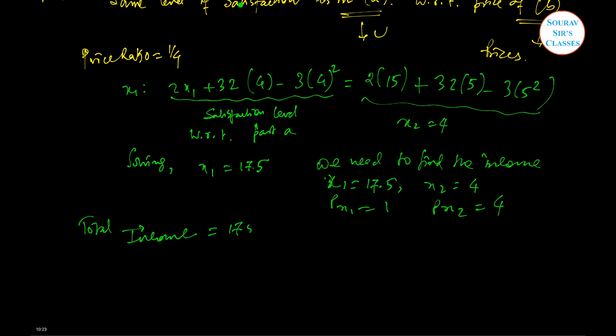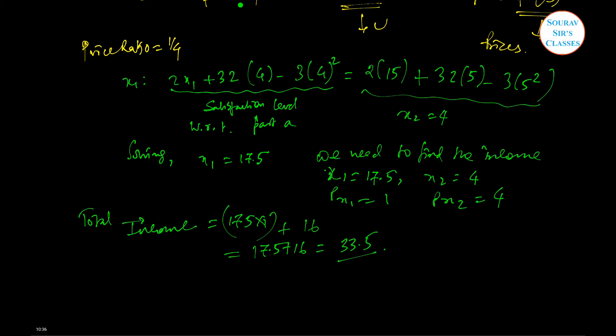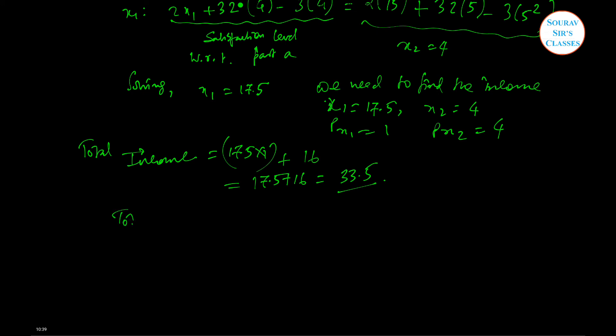So the enhancement in income, the total raise in income, is equal to 33.5 minus 20, that is 13.5 units. So the first problem is done.